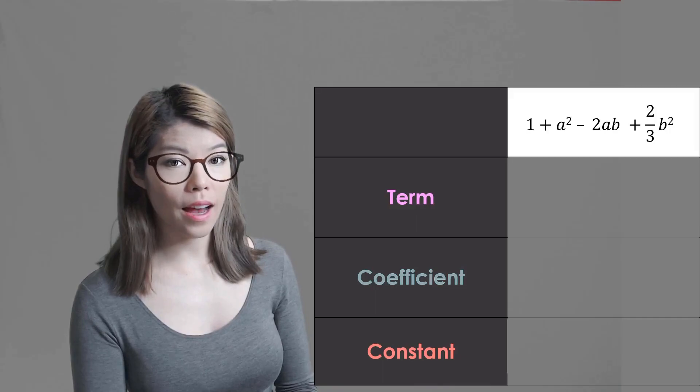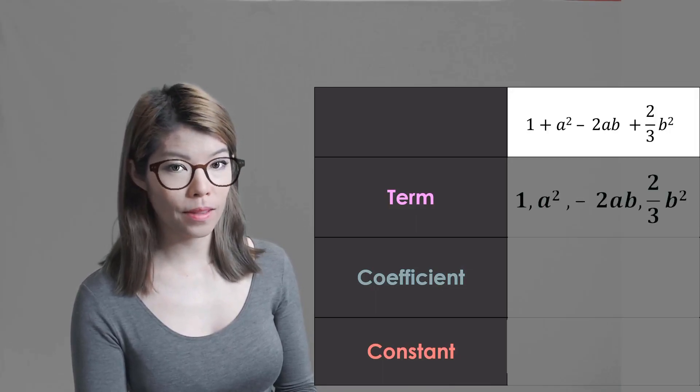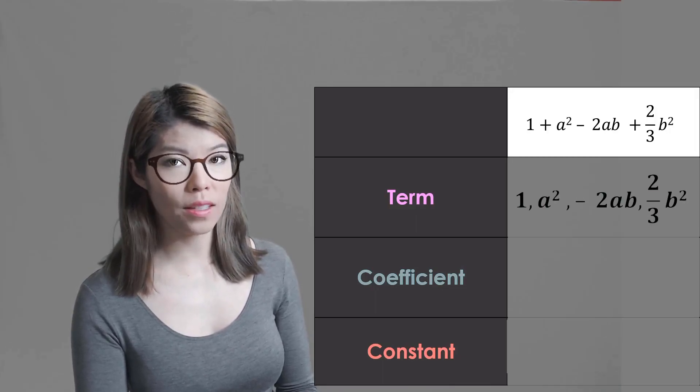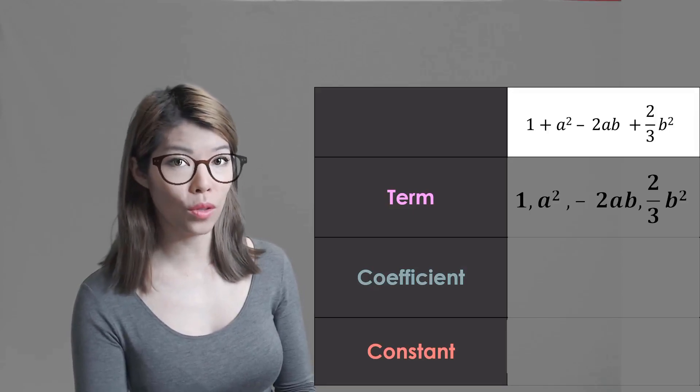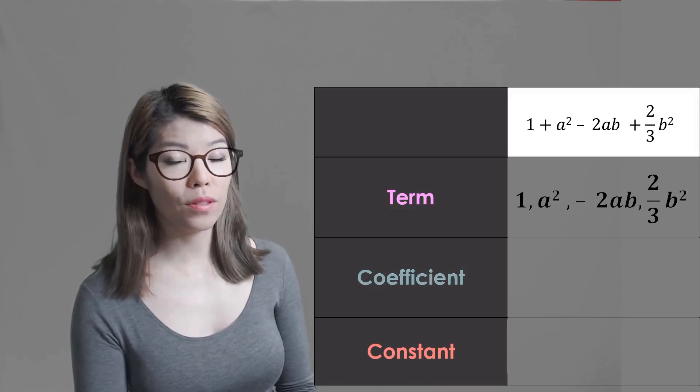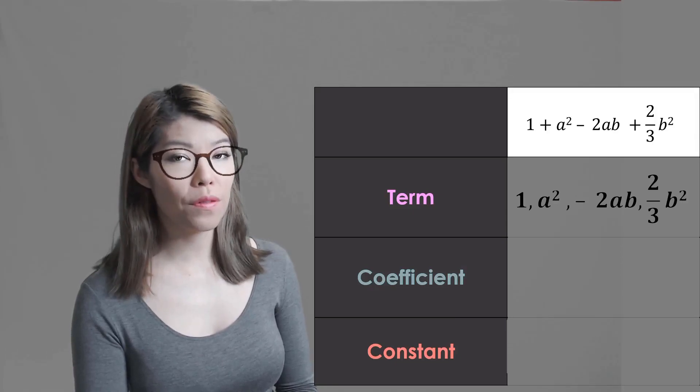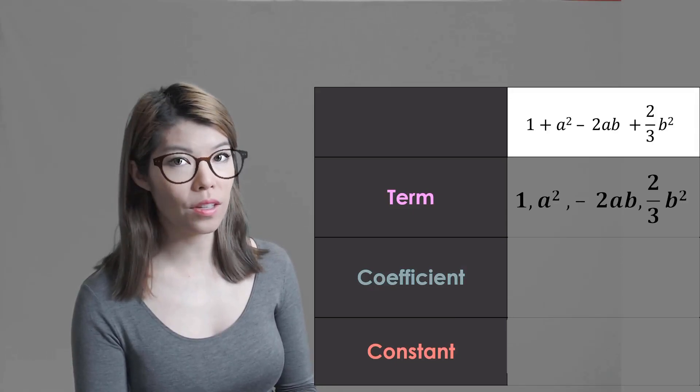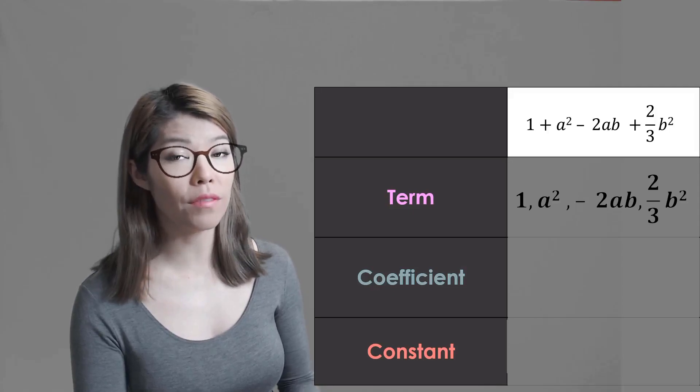Let's see that there are four terms. There's the 1, the a squared, the minus 2ab, and the 2 thirds b squared. Be very careful that you include the negative when you're writing down the term. There are three coefficients here because the 1 is not a variable so it has no number in front of it.